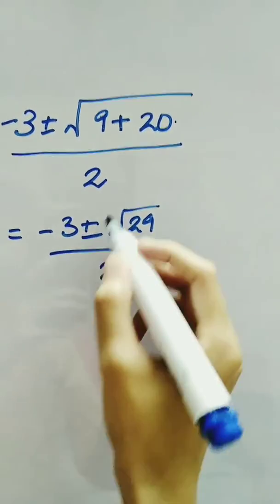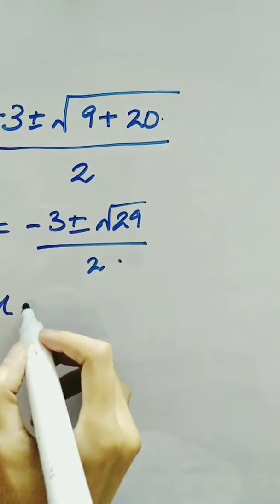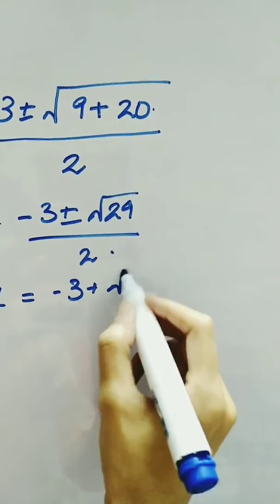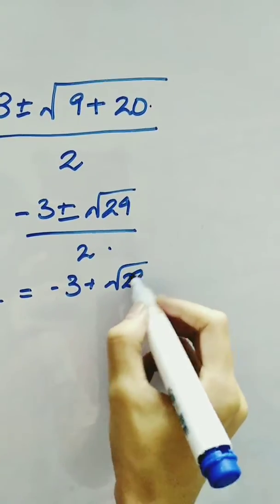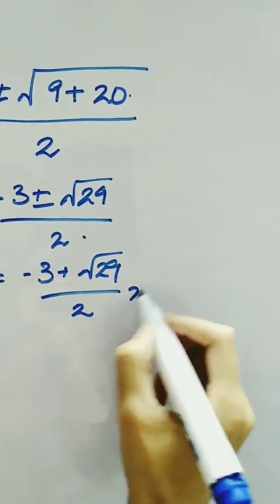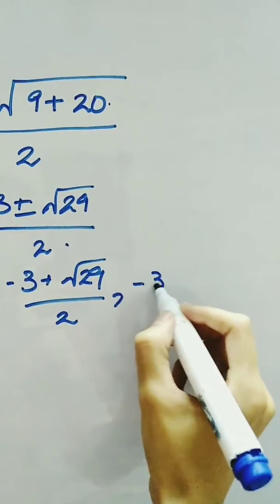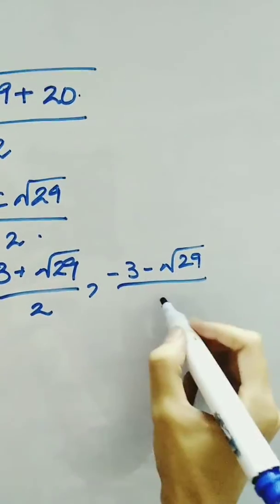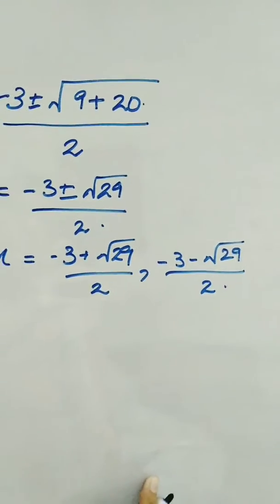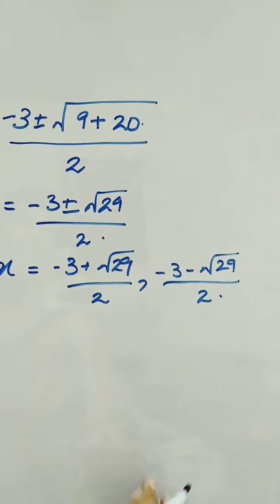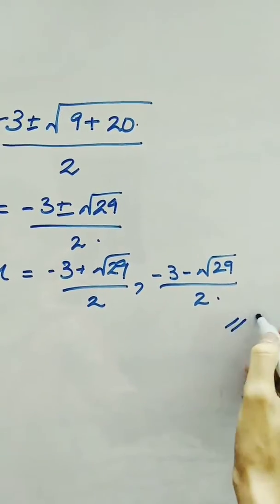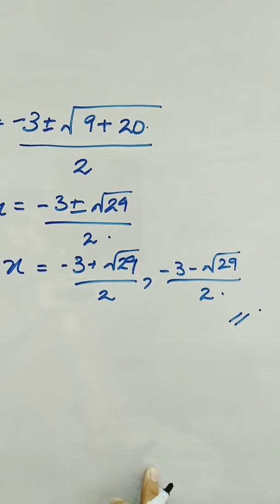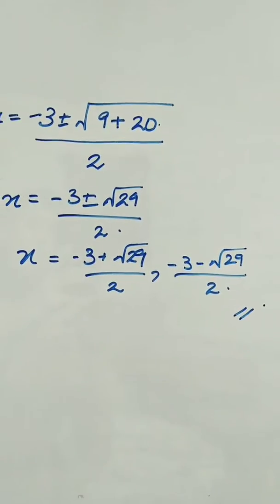These are the two values: minus 3 plus root 29 over 2, and minus 3 minus root 29 over 2. These are the values of x obtained by using the quadratic formula.